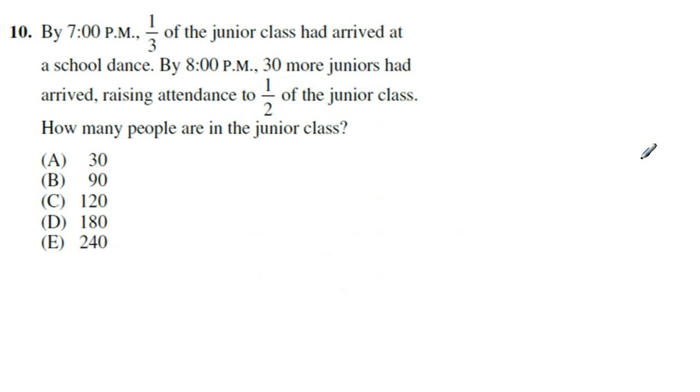Question 10 here says, by 7 o'clock p.m., one-third of the junior class had arrived at a school dance. By 8 o'clock p.m., 30 more juniors had arrived, raising the attendance to half of the junior class. How many people are in the junior class? Well, if you get to this question and you do get stuck and you're not sure how to approach it, let's do what we said first here. Can you use your answer choices to help you out? In this case, it says how many people are in the junior class? Let's start by looking at choice C. Say there's 120 people in the junior class. And now let's go back through the problem.